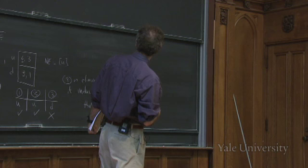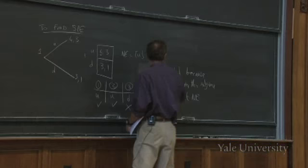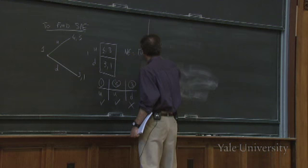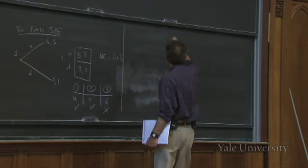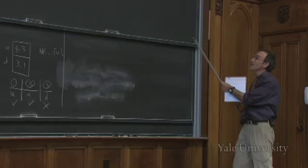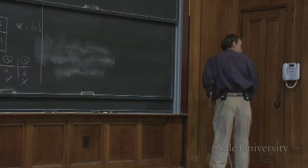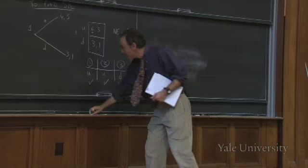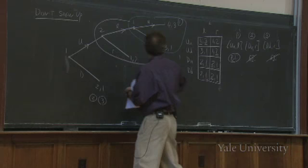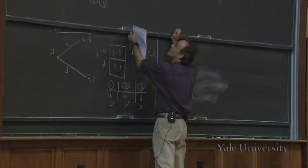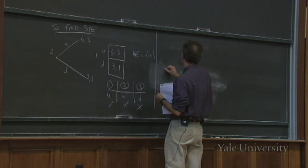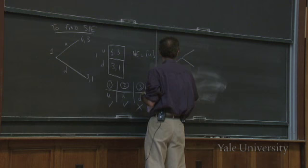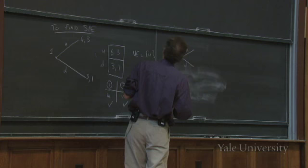Now let's look at the next sub-game — working from the back, the next sub-game starts from the node where player two moves. This pink sub-game starts with player two choosing between left and right, then player one choosing up or down. The payoffs are 1,2; 4,3; and 3,1. Writing this as a matrix: up-left is 4,3; down-left is 3,1; up-right is 1,2; down-right is 1,2.